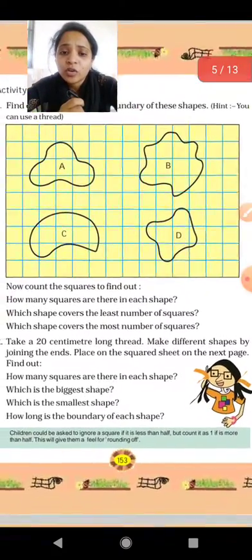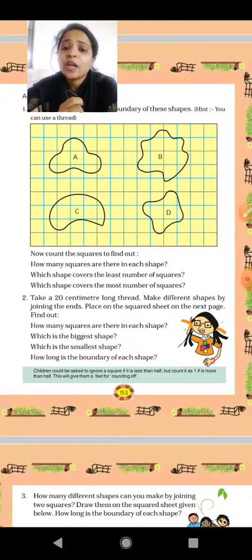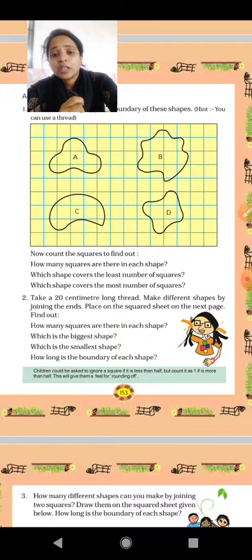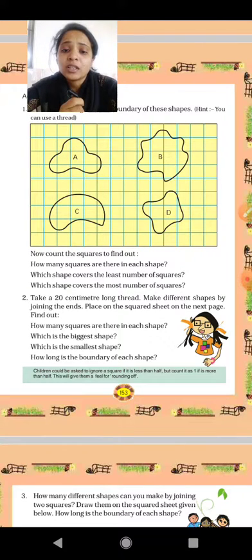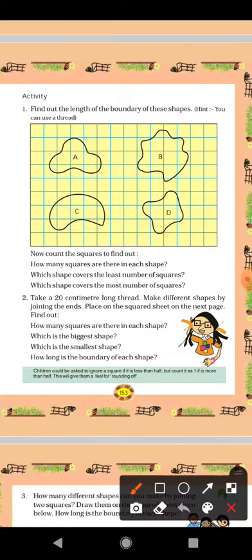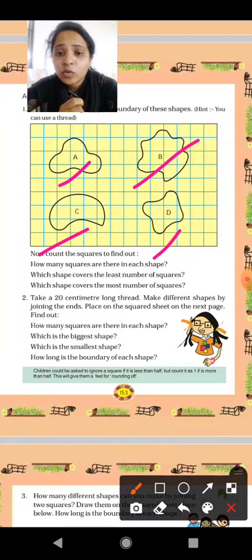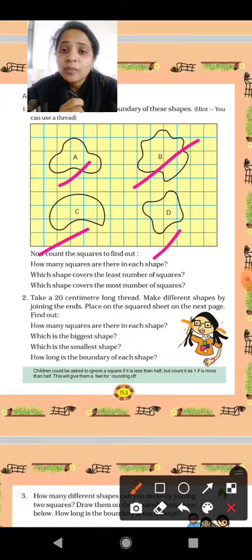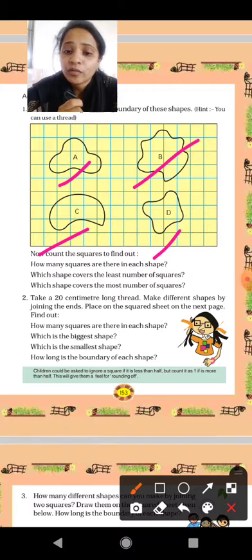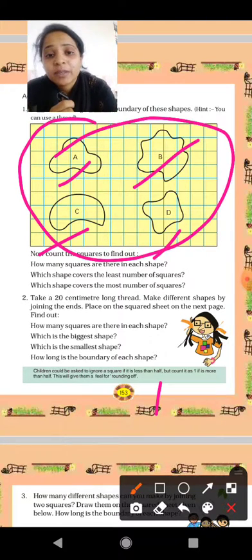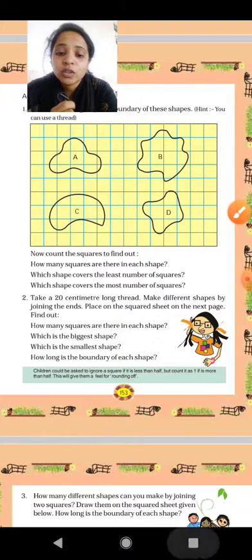Take a 20 centimeter long thread. Make different shapes by joining the ends. Place on the square sheet on the next page and find out, what we have to find out? How many squares are there in each shape? In each and every shape, how many squares are there that we have to find? Which is the biggest shape? Means in which shape the more squares are there that we have to find? Which is the smallest that we have to find? And how long is the boundary of each shape that we have to find? Using this figure.